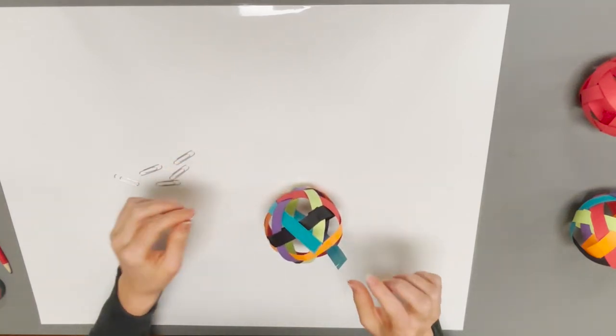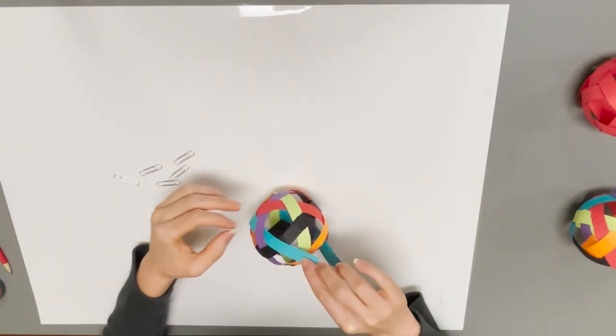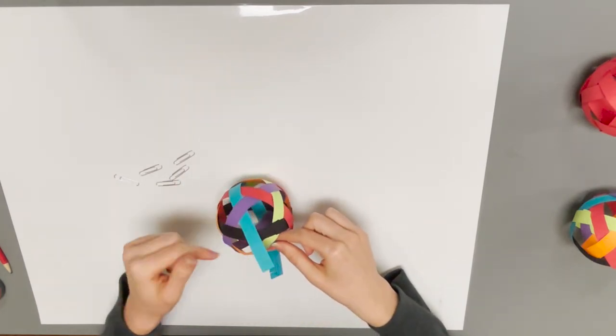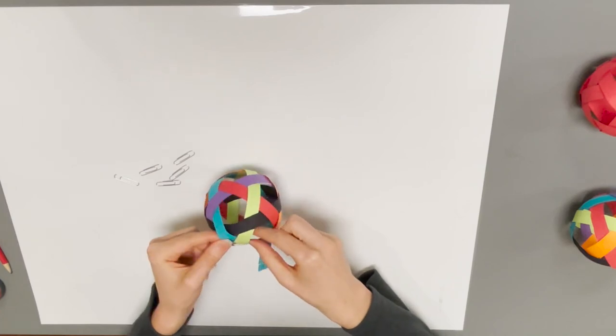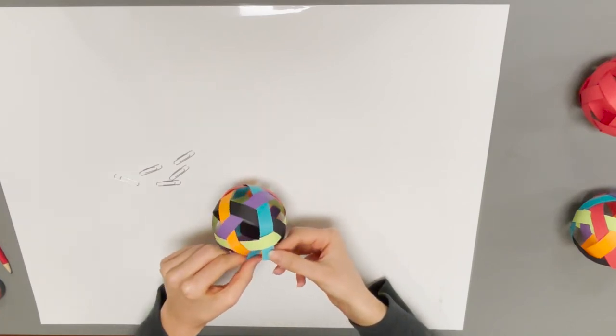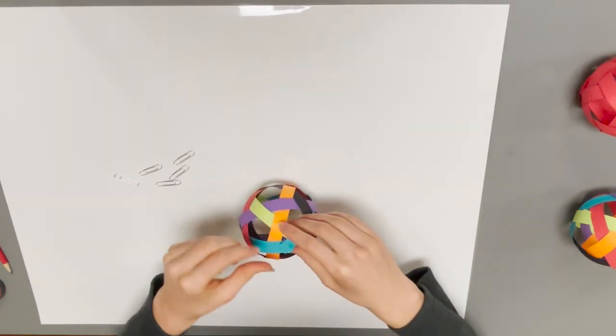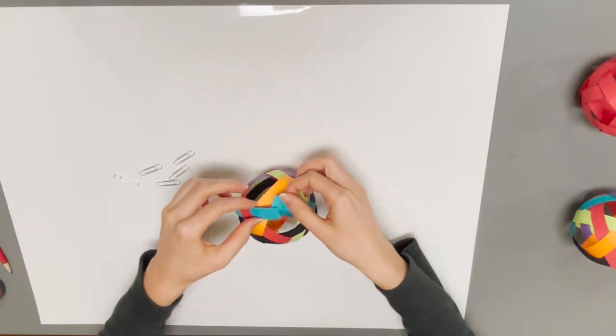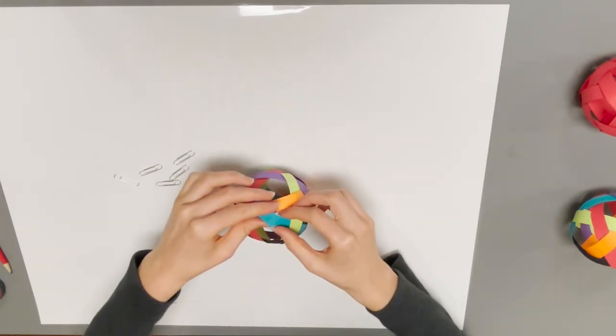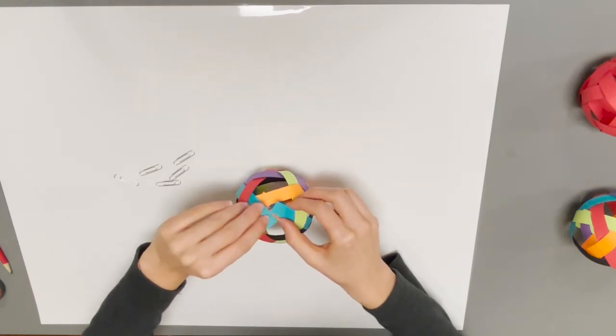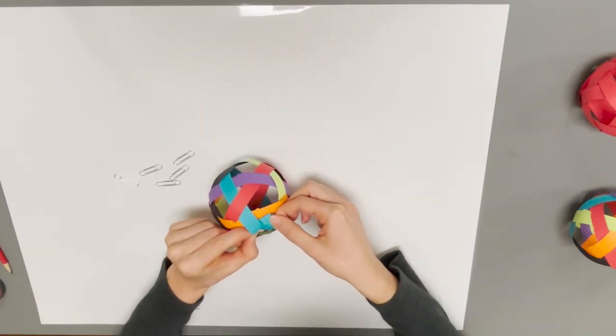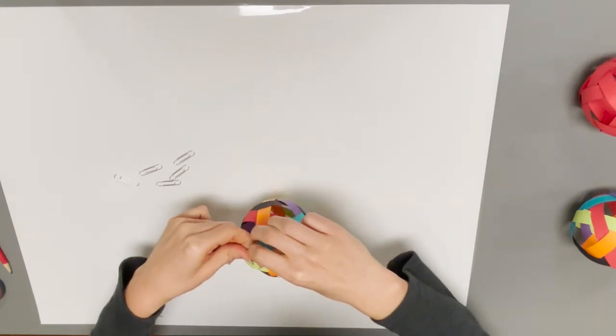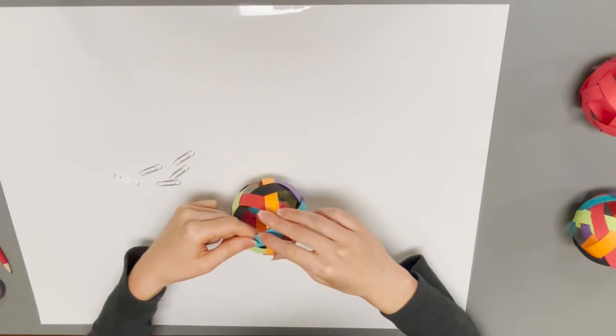So the last one left is the teal to go over the black, under the green, and over the orange. This is the last one to get together. We're going to check on your tabs here and make sure they go inside.